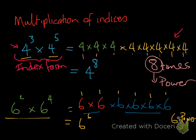If you go back and look at both examples, and look at the powers of the original indices before simplifying, you'll start to notice a pattern. If I simply add the powers together, I get the final power in my simplified index. In this case, 3 plus 5 equals 8, and in this case, 2 plus 4 equals 6. So we can use that concept to come up with a rule.